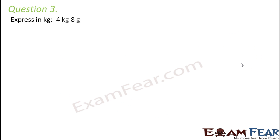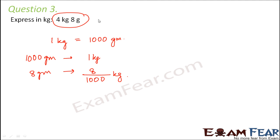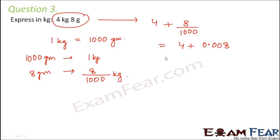Question number 3: express in kg — 4 kg 8 grams. The relation between kilogram and gram: 1 kg equals 1000 grams. When 1000 grams represent 1 kg, then 8 grams would be 8 by 1000 kg. So 4 kg 8 grams can be written as 4 plus 8/1000 kg, which is 4 plus 0.008, giving 4.008 kg.